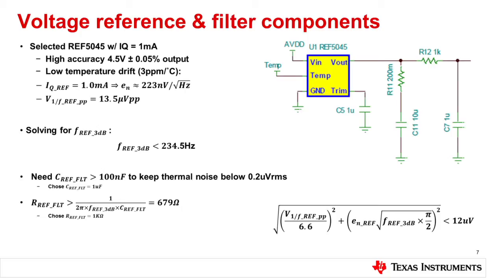Summing it all up, we end up with a broadband noise of exactly 223 nanovolts per root hertz, and the 1/f noise turns out to be 13.5 microvolts peak to peak. Solving for the reference 3 dB frequency gives exactly 234.5 kilohertz. The conversions between RMS and peak-to-peak are done by dividing or multiplying by 6.6, which gives us less than 12 microvolts RMS.